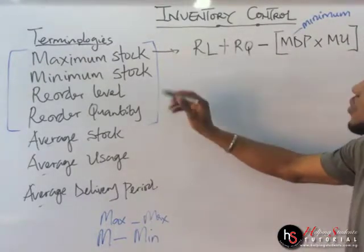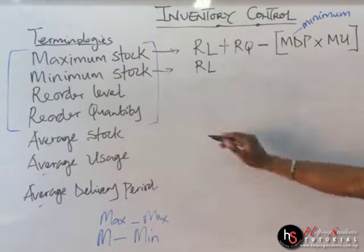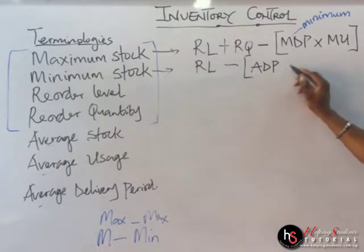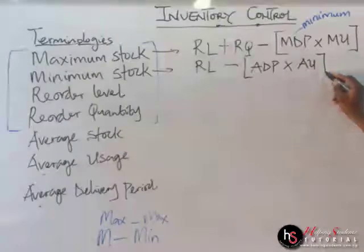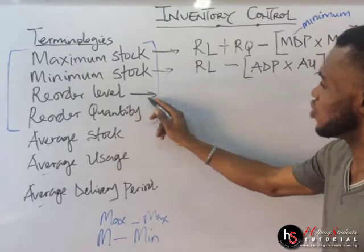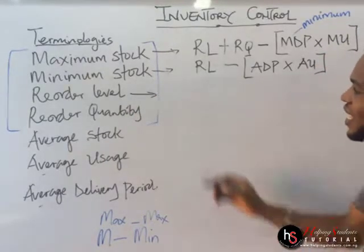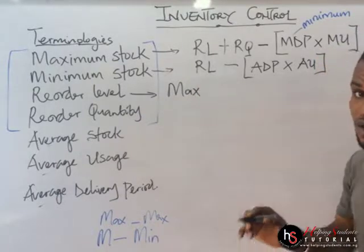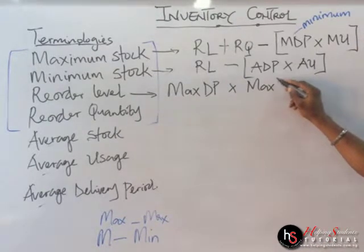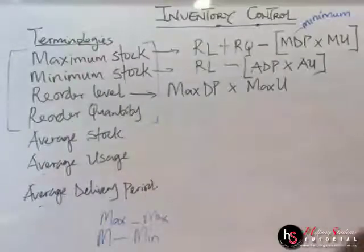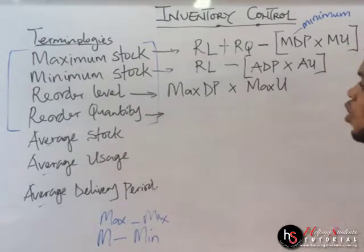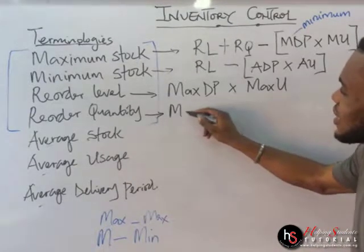For minimum stock, the formula is: reorder level minus, in brackets, average delivery period times average usage. For reorder level, the formula is: maximum delivery period times maximum usage. Take note of that.